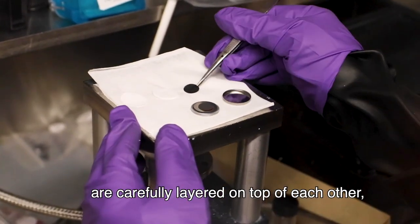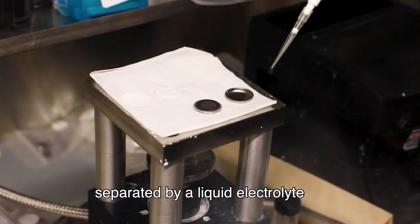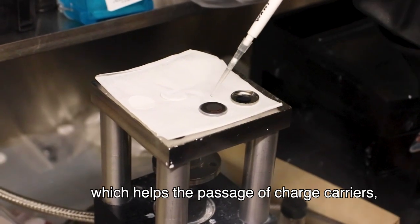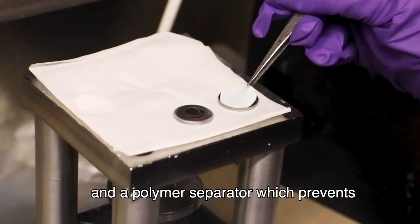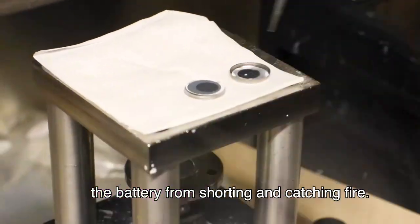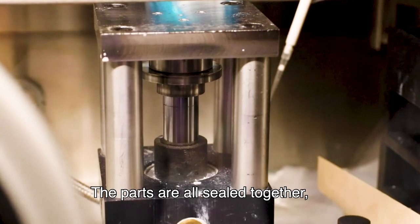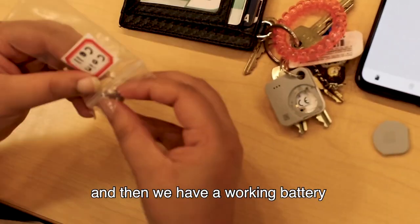The cathode and the anode are carefully layered on top of each other, separated by a liquid electrolyte, which helps the passage of charge carriers, and a polymer separator, which prevents the battery from shorting and catching fire. These parts are all sealed together, and then we have a working battery.